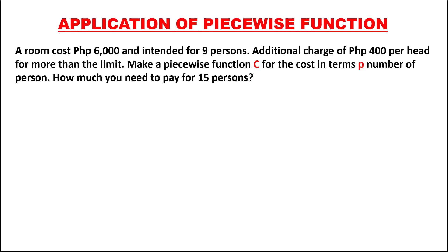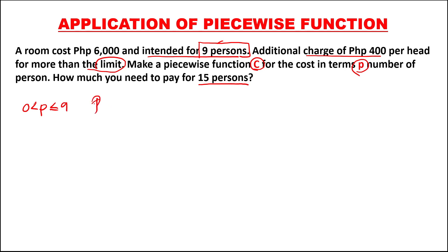For the next problem, a room costs 6,000 pesos and is intended for 9 persons, with an additional charge of 400 pesos per head for more than the limit. The limit is only 9 persons. We also have 2 conditions. For the intended 9 persons, if the number of persons is greater than 0 but less than or equal to 9, the cost is 6,000 pesos.